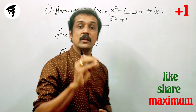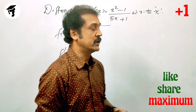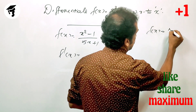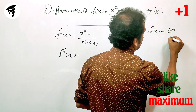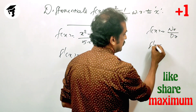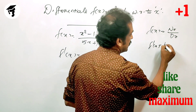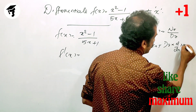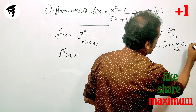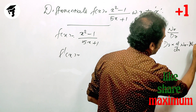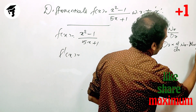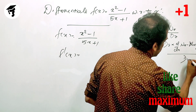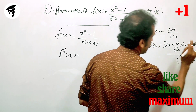Here we use the quotient rule. If f of x is equal to numerator by denominator, then f dash x is equal to denominator into d/dx of numerator, minus numerator into d/dx of denominator, divided by denominator the whole square.